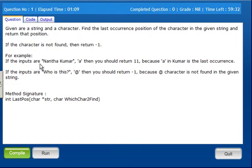If the inputs are 'nanda' and 'a', in the string there are multiple 'a' characters here, here, and here. So this is the last occurrence, then you should return 11, because 'a' in 'kumar' is the last occurrence.